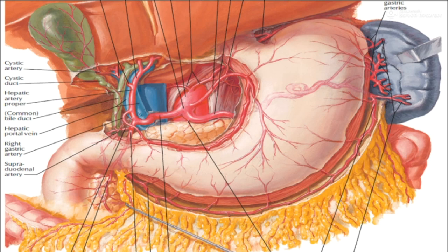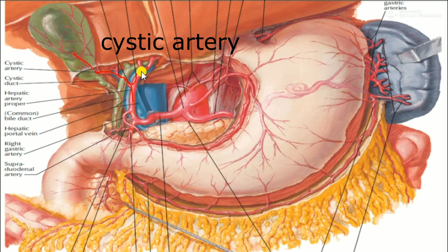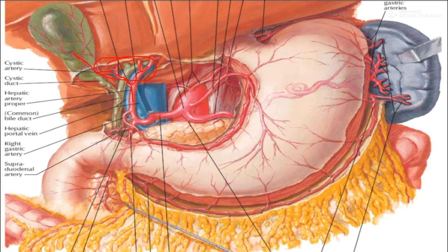The hepatic artery proper gives right and left branches. The right branch gives the cystic artery for the gallbladder. On reaching the porta hepatis, the hepatic artery proper divides, and the right gastric artery anastomoses with the left gastric artery.